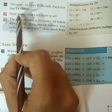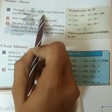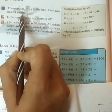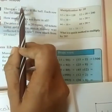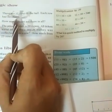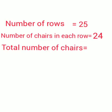Our first question is: how many chairs are there in the hall? There are 24 chairs in each row and totally 25 rows. Now we want to find the total number of chairs. Number of rows equals 25. Number of chairs in each row equals 24. So how can we find the total number of chairs? By multiplying 25 into 24.